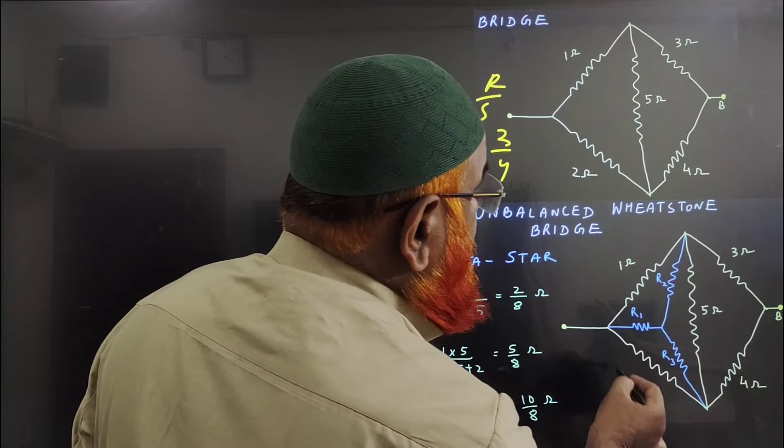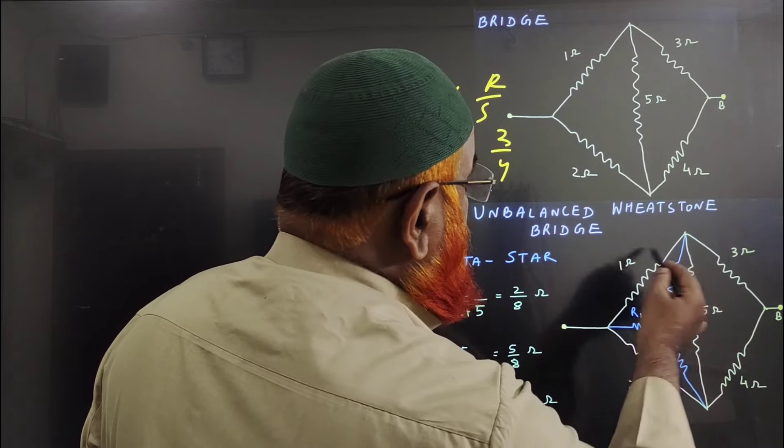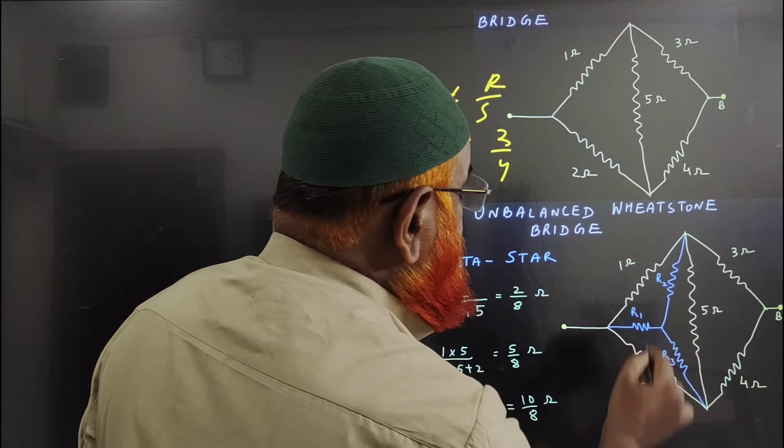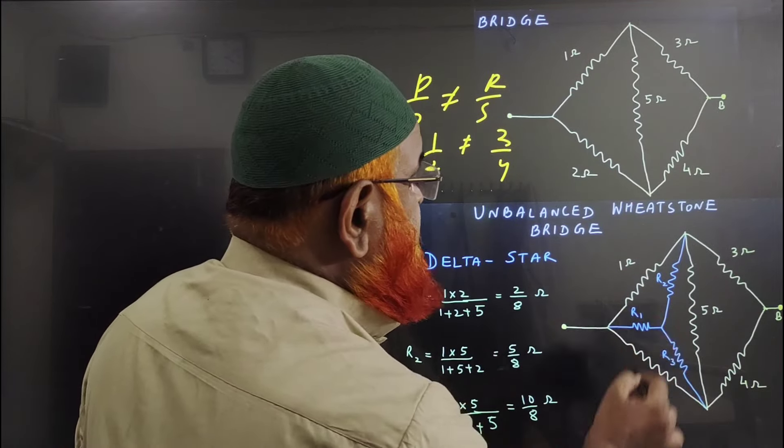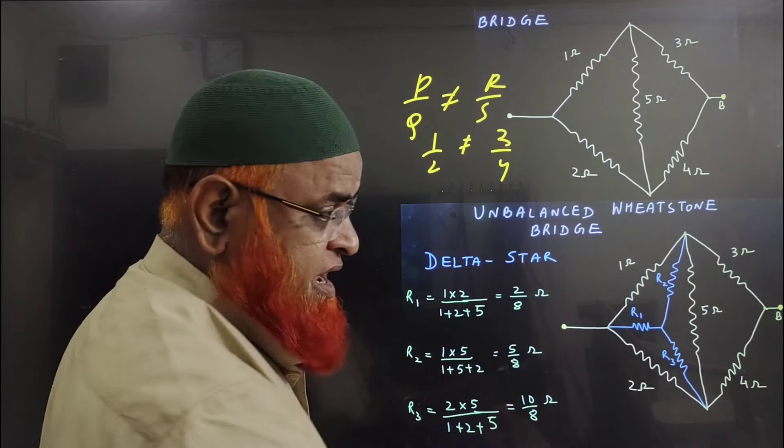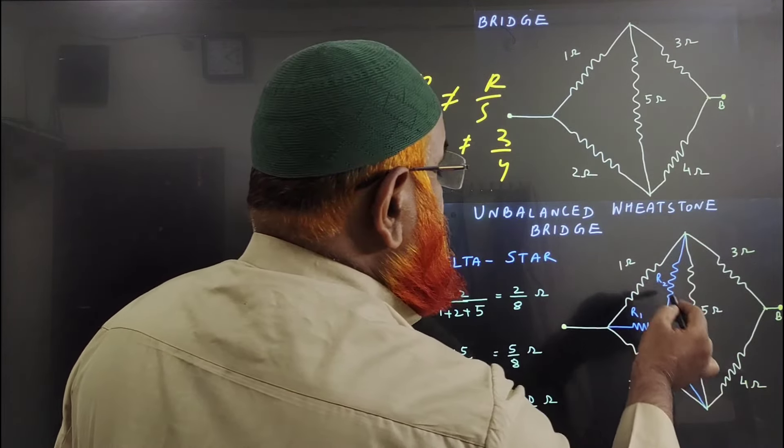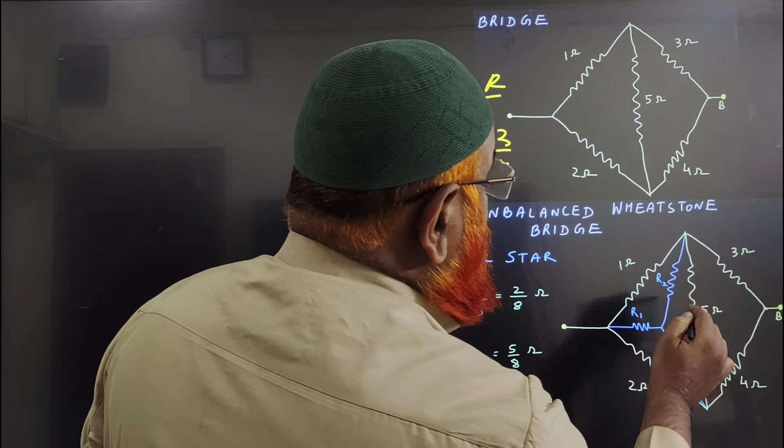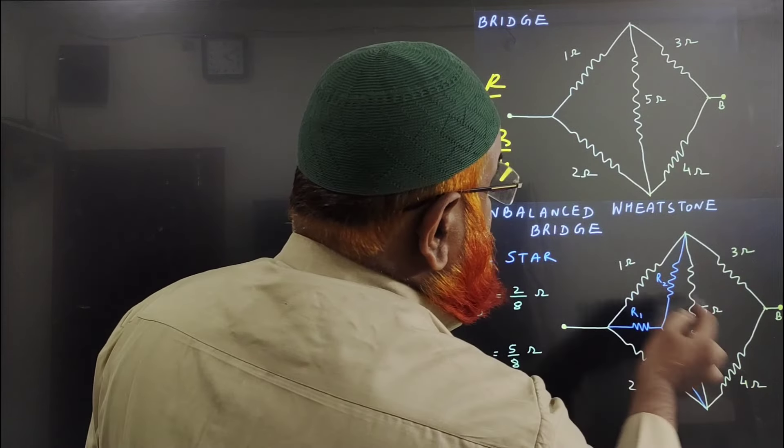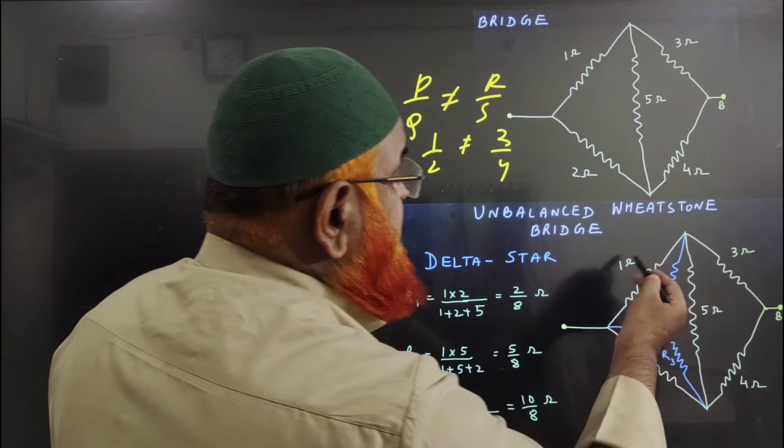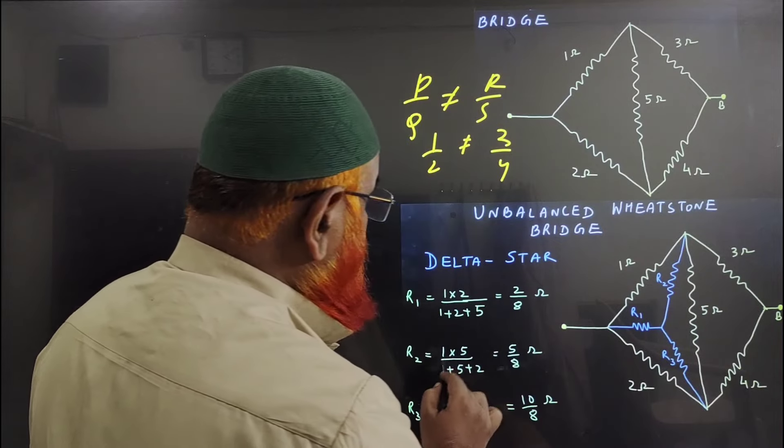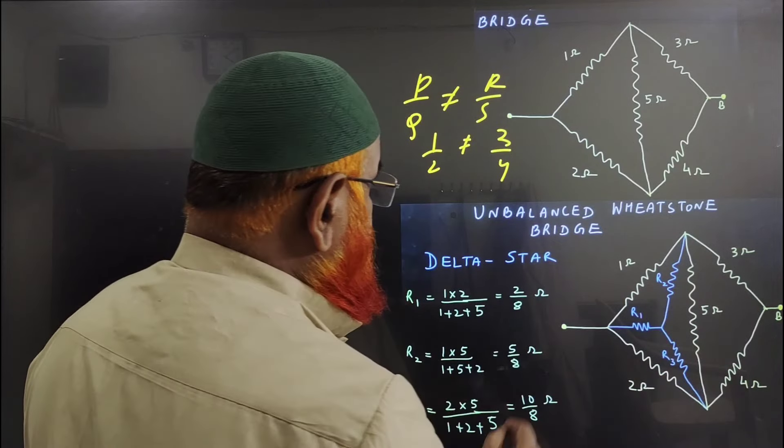That means 1 into 2 divided by 1 plus 2 plus 5, so we're getting 2 by 8. For R2, it's the product of either sides of the resistance: 1 into 5 divided by all three sum, which is 5 by 8.